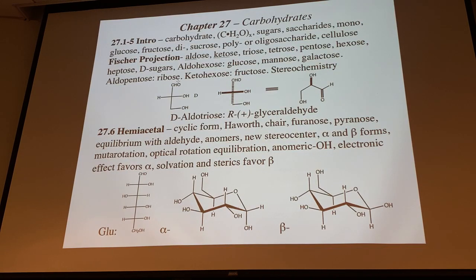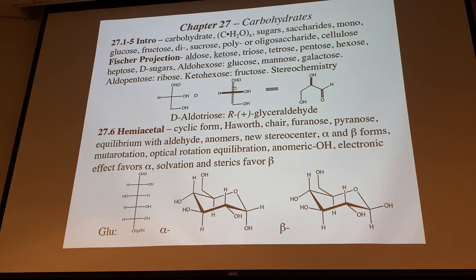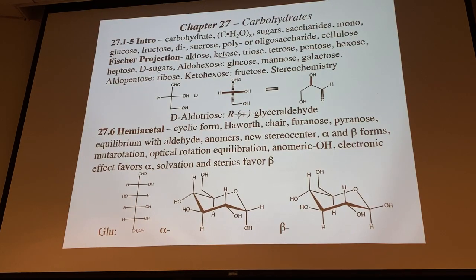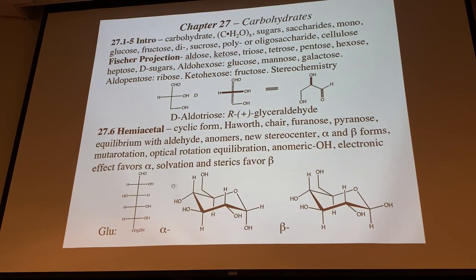Glucose is a hexose with four stereocenters — the pattern is right, left, right, right in the Fisher projection. Mannose and galactose are also common in metabolism. Ribose is important for DNA and RNA. Looking at the simplest sugar, D-glyceraldehyde, it has one R stereocenter. The D-series simply means the last stereocenter is on the right side. For five- and six-carbon sugars, they exist in equilibrium with their ring-closed pyran form.